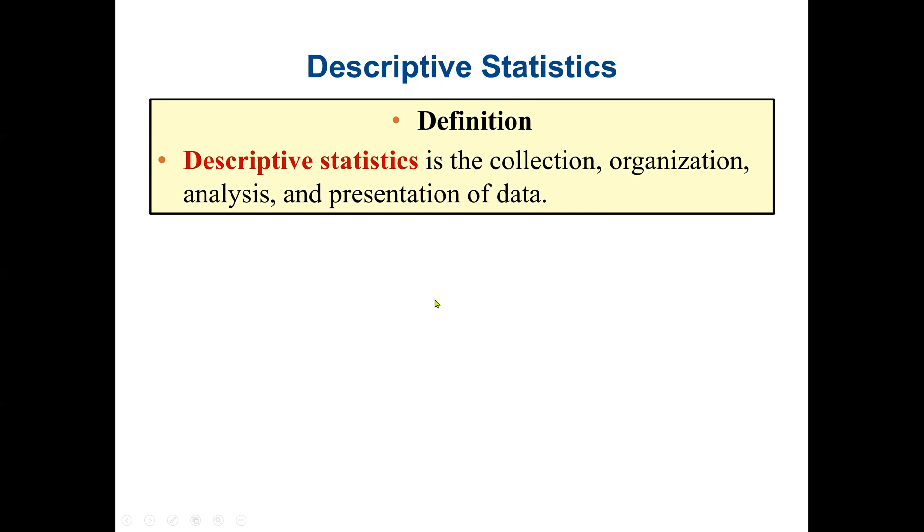Then we move on to probability. Normally, probability, we have three different types. We have the classical probability. For example, what's the probability that if I toss a coin, I may get a head or tail? This is classical. It doesn't base on previous studies. It's also an independent event. So since we have only two parts, head and tail, then we have half chance of getting one, 50% or 0.5. That's classical probability.